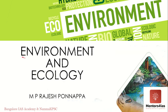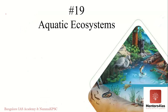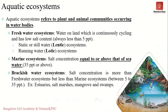Welcome to this lecture series on environment and ecology presented by Mentors for IAS in association with Bangalore IAS Academy and Nama KPSE. In this video we'll be discussing aquatic ecosystems. An ecosystem is a community of organisms that live and interact within a particular environment. When it comes to an aquatic ecosystem, that environment is water, and all plants and animals live either in or on that water.